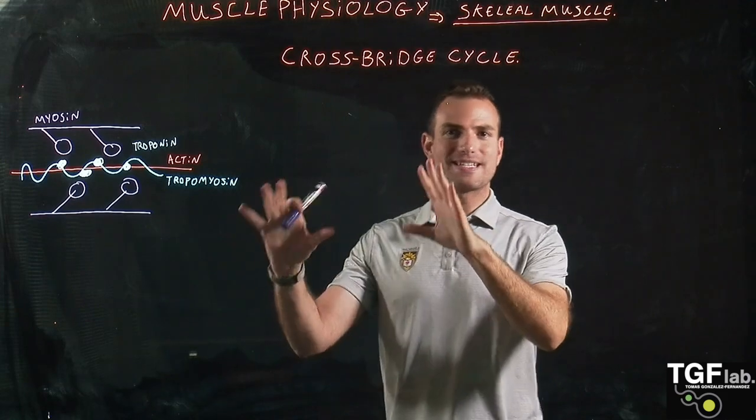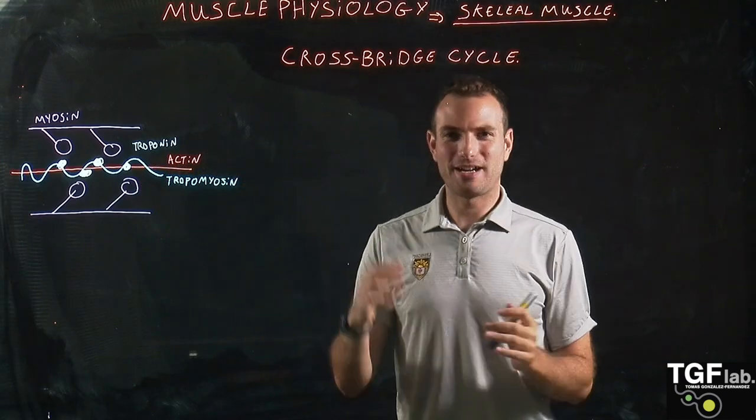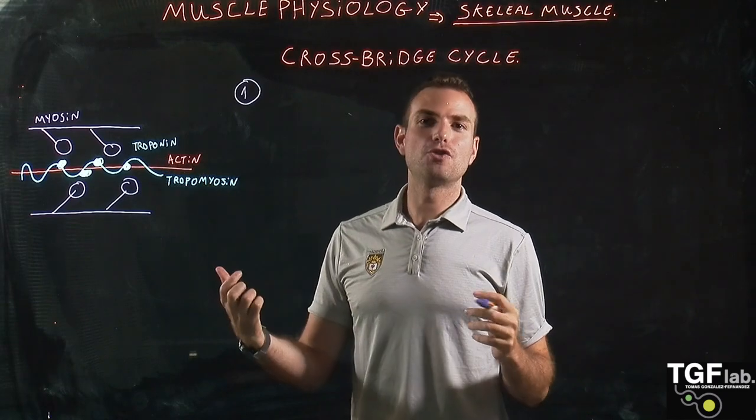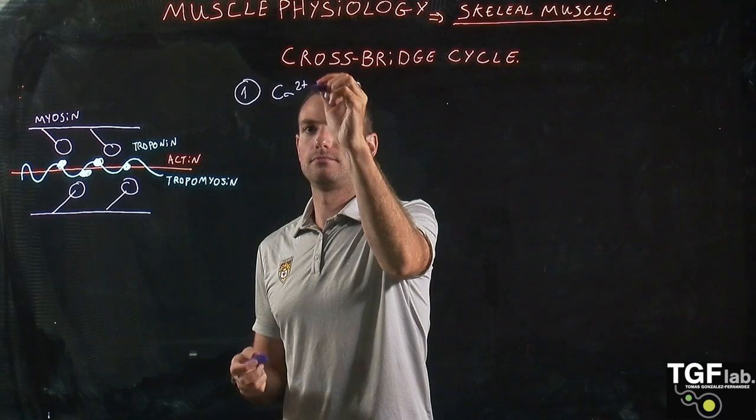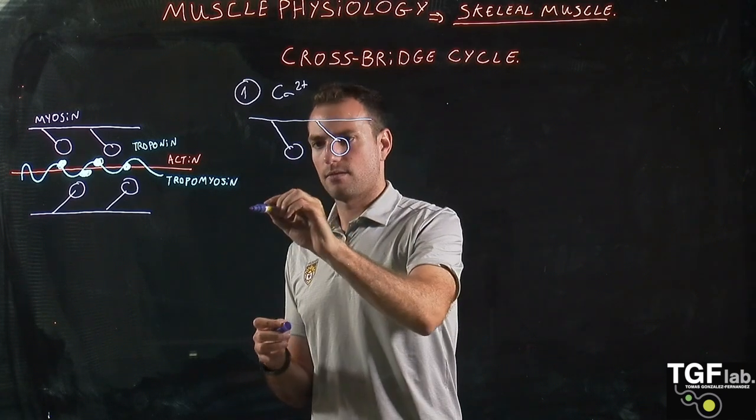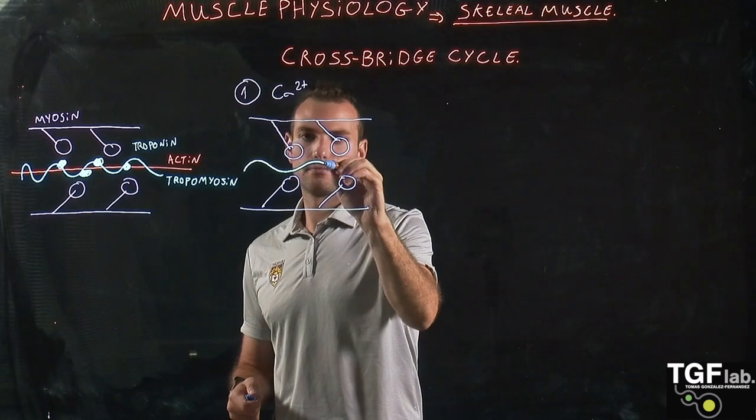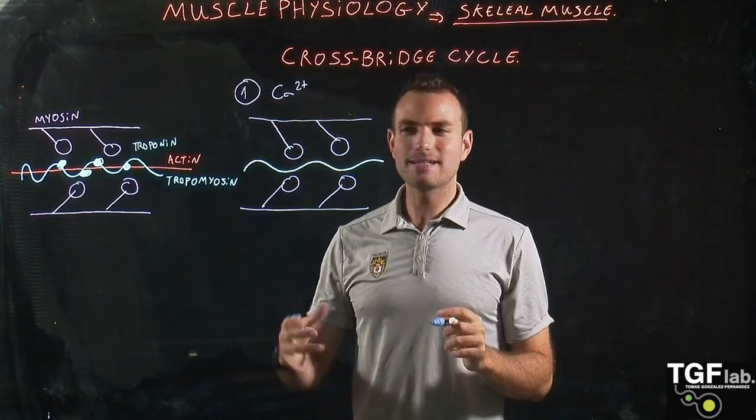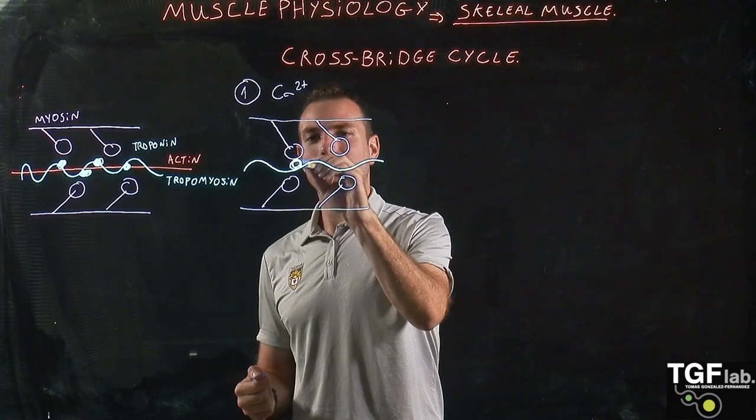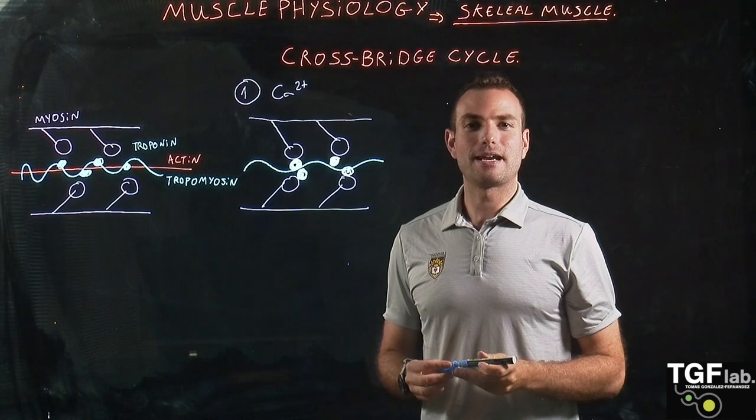Okay. So the first step here in the cross-bridge cycle or in the sliding filament mechanism is the conformational change in the troponin due to the binding of calcium. So what is going to happen is that the calcium here is going to bind to the thin filament and it's going to make a conformational change so the troponin and myosin can bind here to the head of the myosin. And this is called the cross-bridge formation.